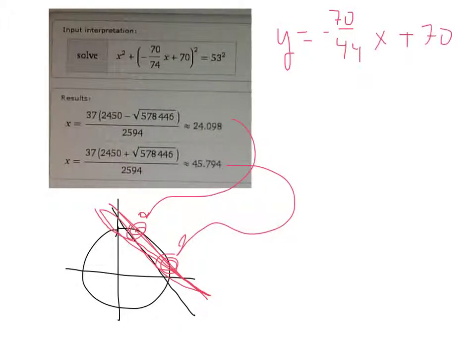I'm going to drop in 24.098 to get a y value, and I'll also drop in 45.794 and get a y value.